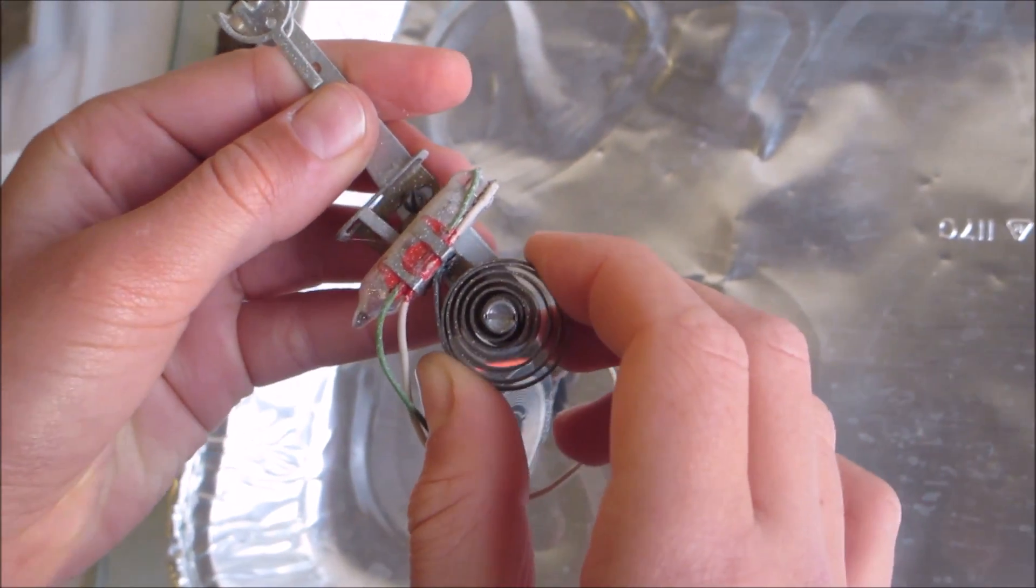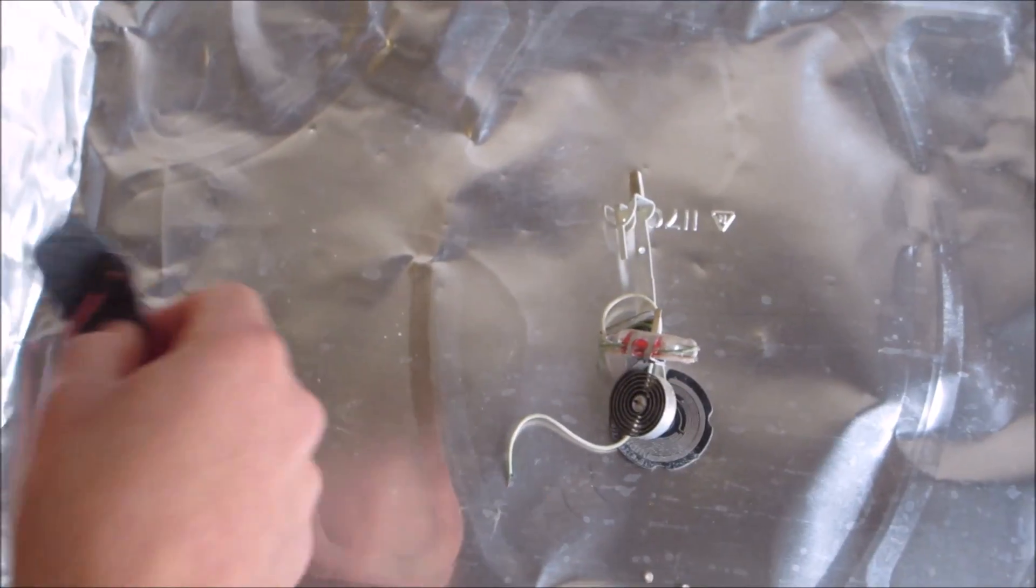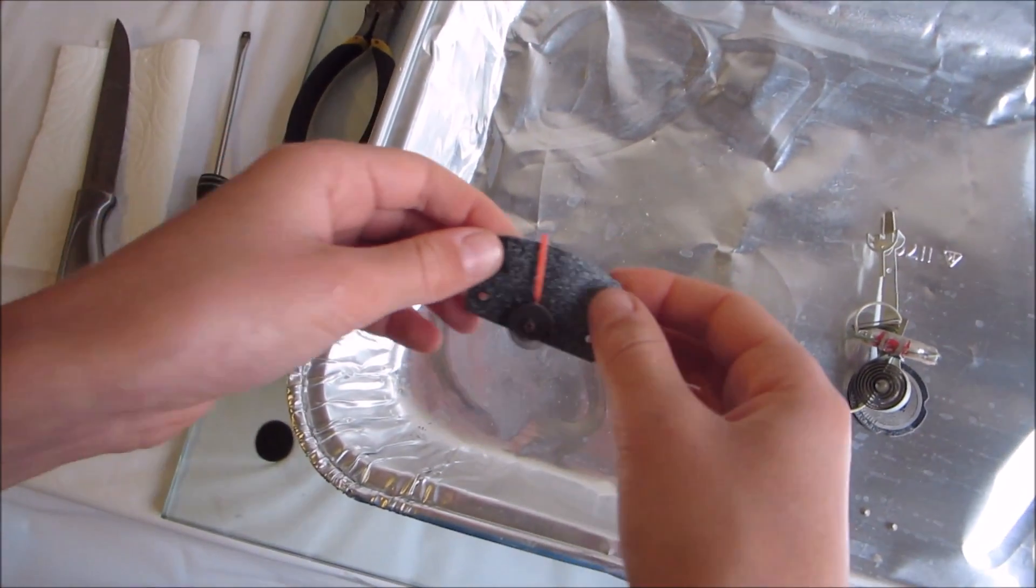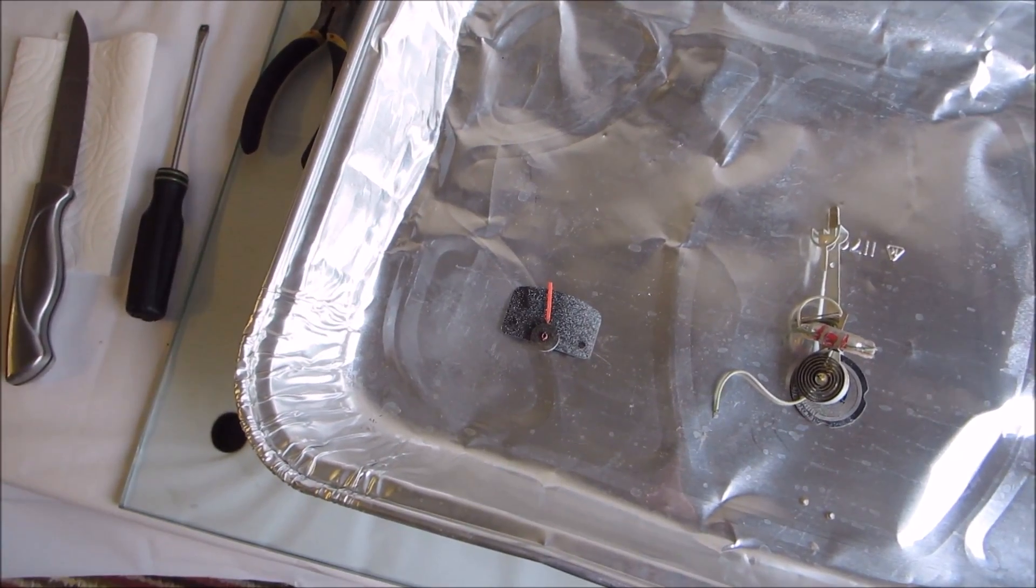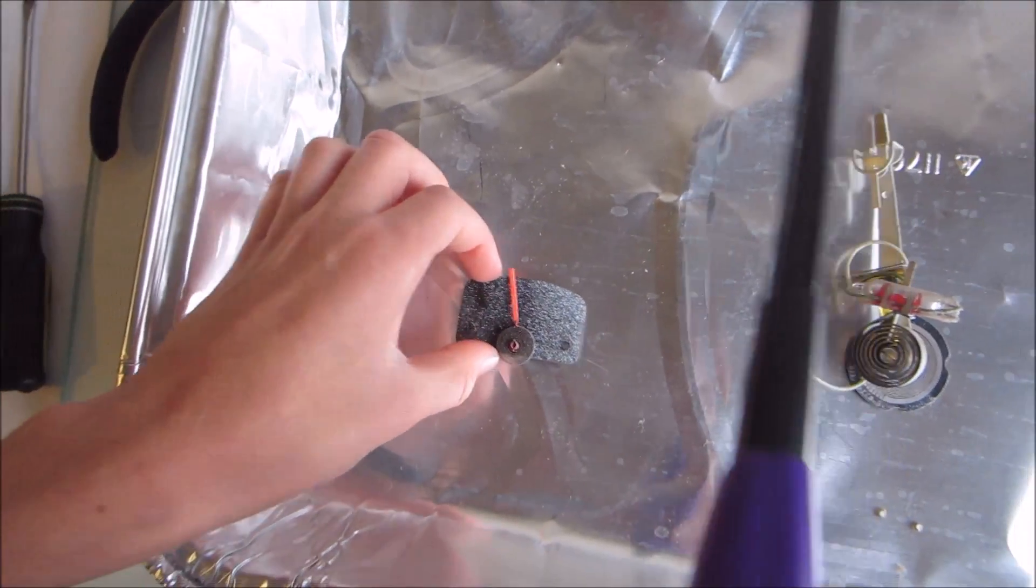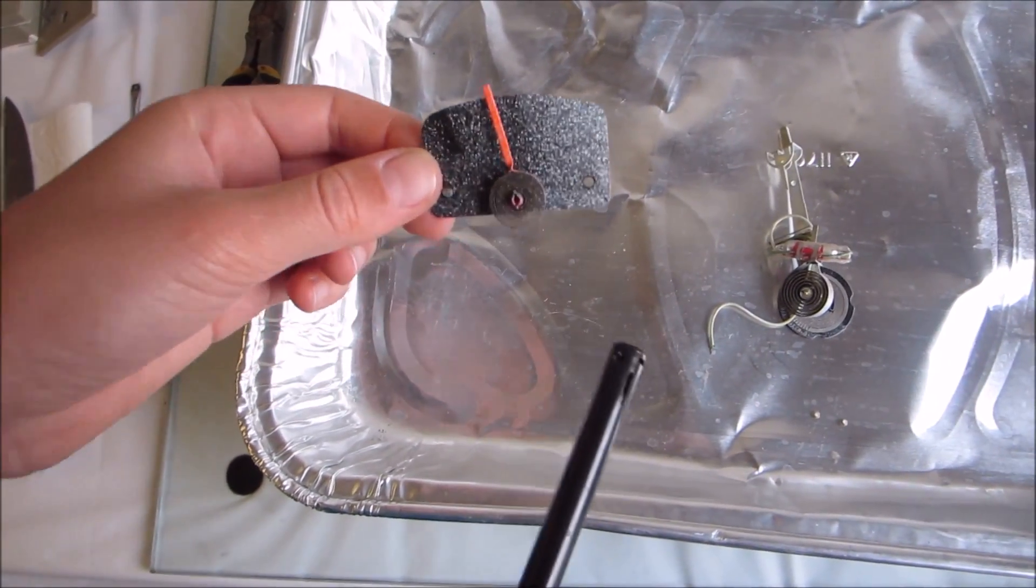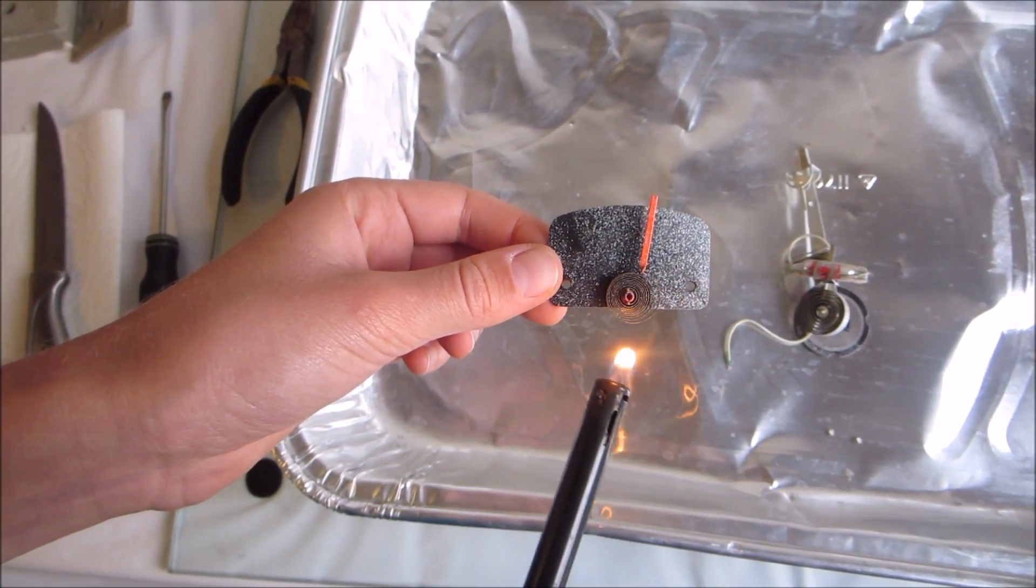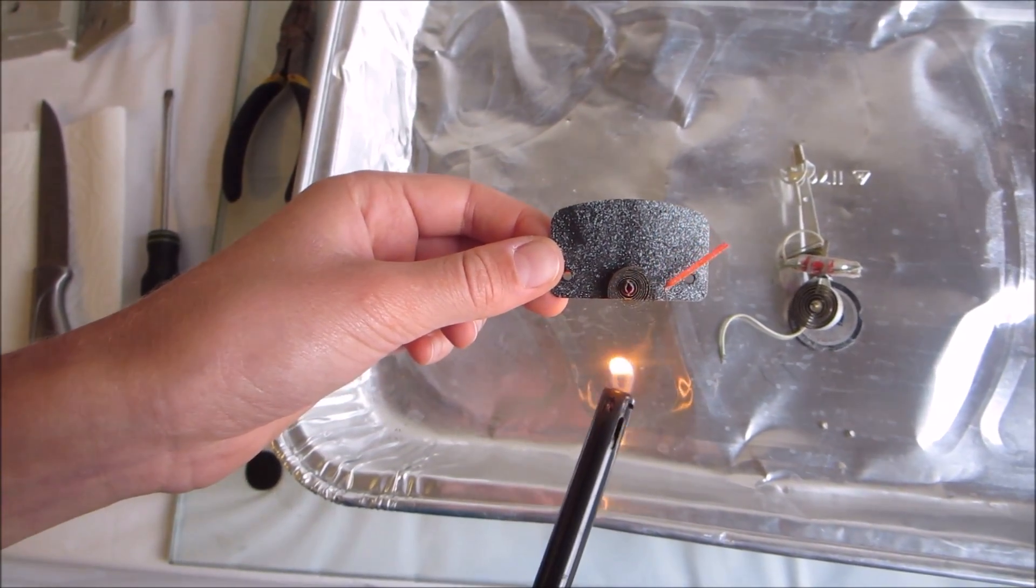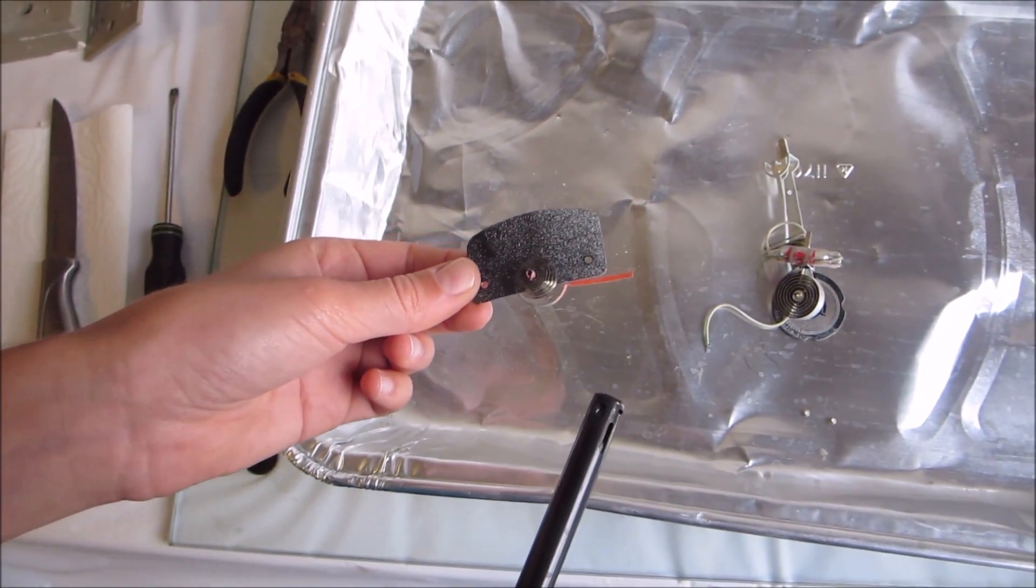And let's see if we can show this bi-metal heating up and moving. If I just take a lighter, I should be able to show this. Alright, so if you can see this position of the metal, it immediately begins to uncoil.